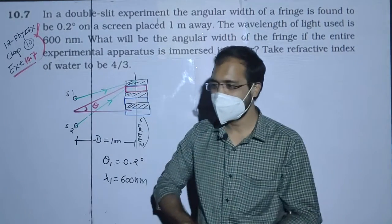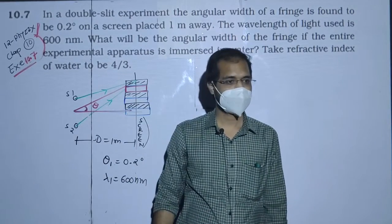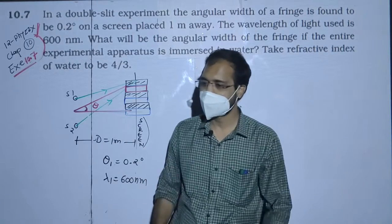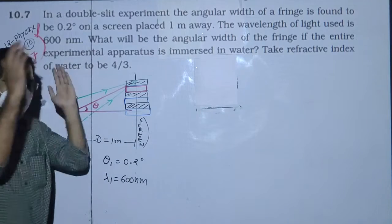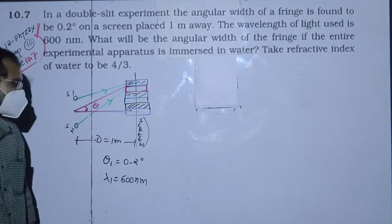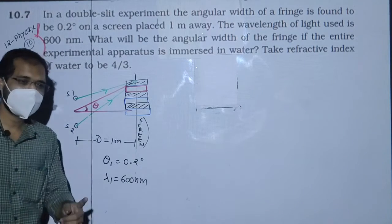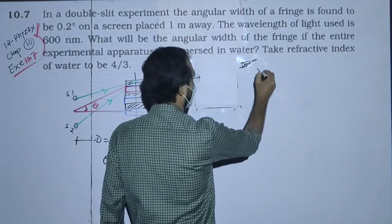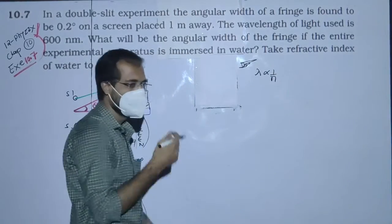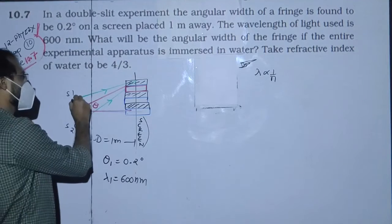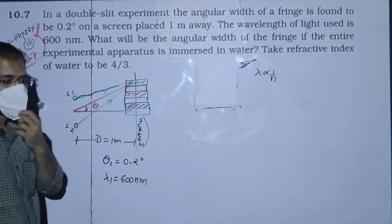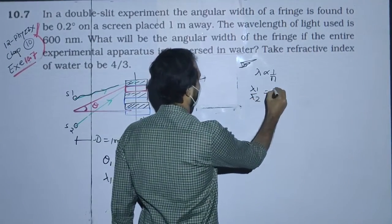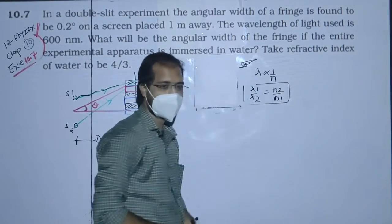When the entire apparatus is put into water, there will be a difference in angular width because lambda is inversely proportional to the refractive index. When the apparatus is submerged in water, the wavelength will be different. Their relation is: lambda 1 upon lambda 2 equals n2 upon n1.